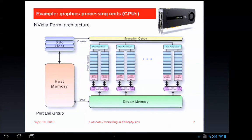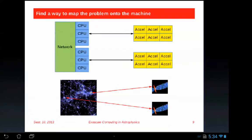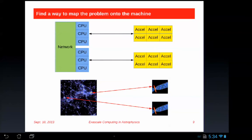A lot of people, when they want to speed up their code with a GPU, take a large array on the host, move chunks of it to the GPU, do work on it, and bring it back — trying to send over only as much as needed. But they're still sending a lot of data. I would argue that is not the best way to approach this. What makes more sense is to find a way to map the problems we're interested in onto the machine we have available.